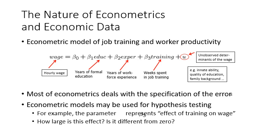What about training — the main focus here? The relationship between weeks spent in job training and hourly wages is summarized in Beta 3, and it is expected to be positive. But don't forget that we still have U — the unobserved determinants of wages. We only have three measured variables: years of education, years of workforce experience, and weeks spent in job training.